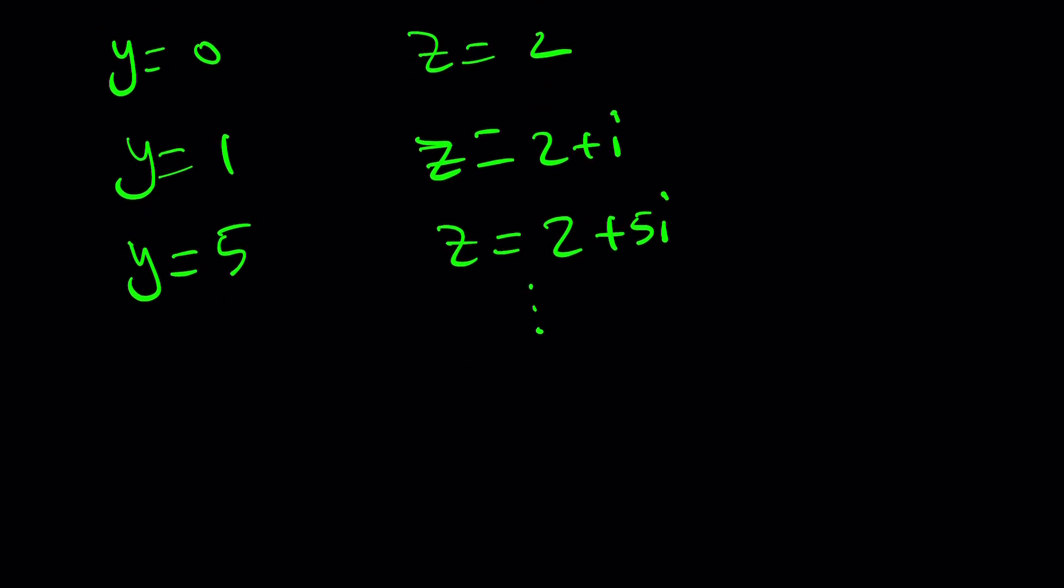If you said the real part, you got it. So let's go ahead and see. We have 2 here. As a complex number, it basically means 2, 0. And then we have the 2 plus i, which is 2, 1. And then we have the 2 plus 5i, which is 2, 5.